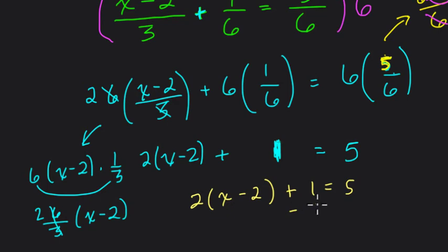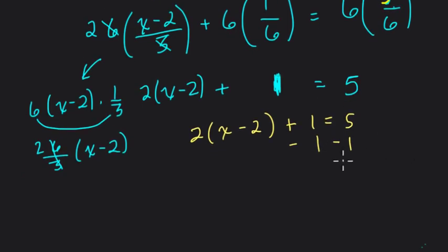So, I'm going to rewrite it because it's looking a little bit sloppy here. 2 times x minus 2 plus 1 equals 5. Before I distribute, I'm going to subtract 1 on both sides. It's my preference. You can distribute first if you want. And that gives us 2 times x minus 2. 1 minus 1 is 0, and 5 minus 1 is 4.